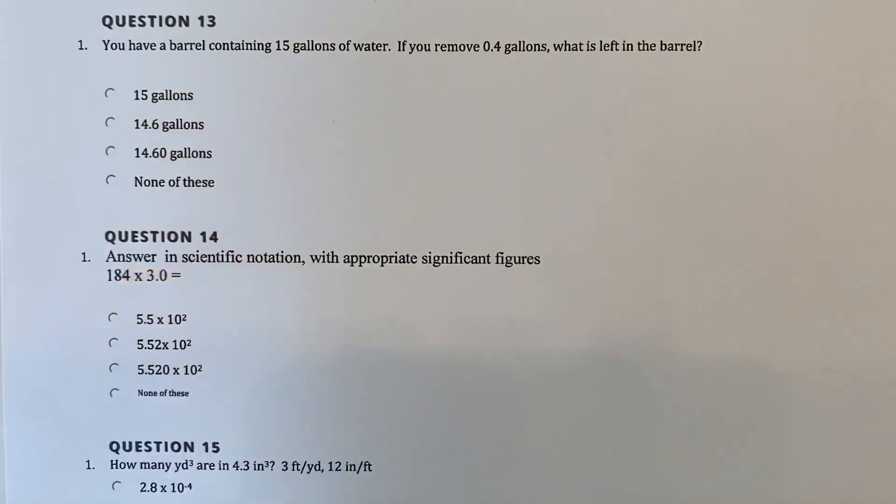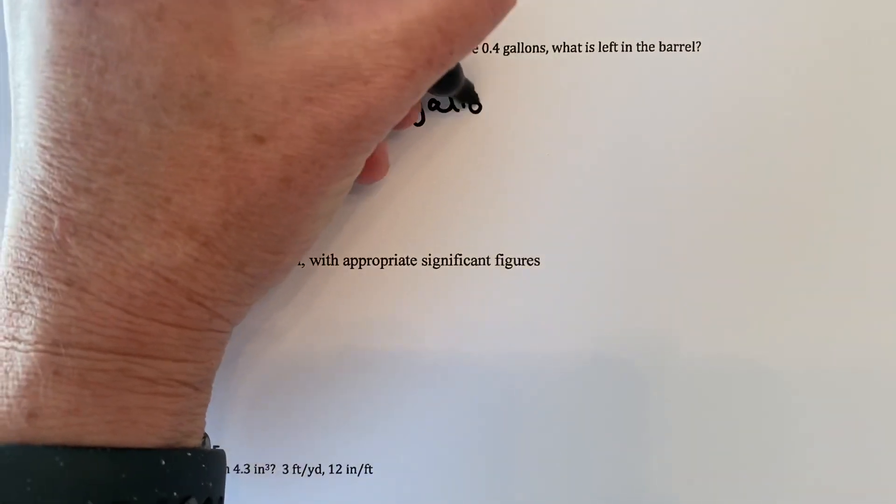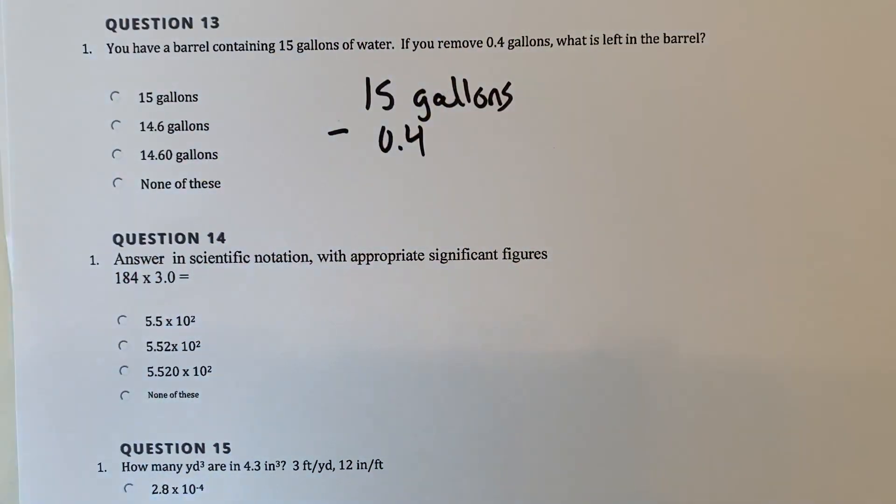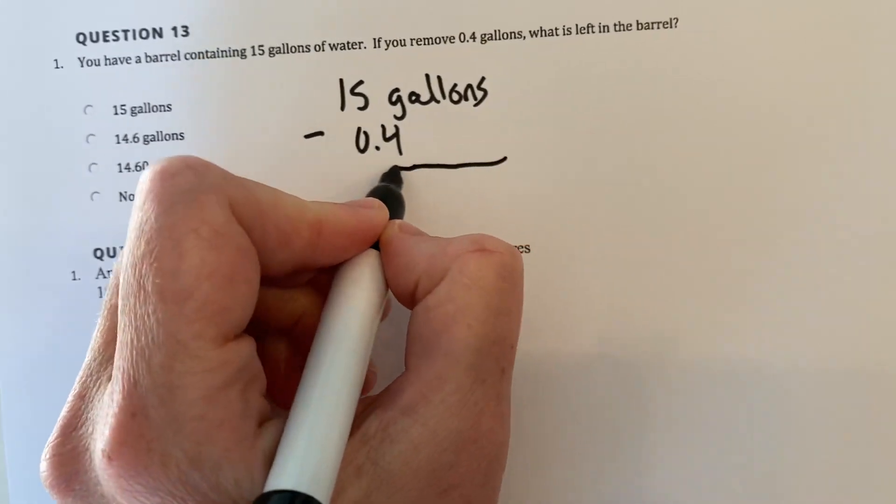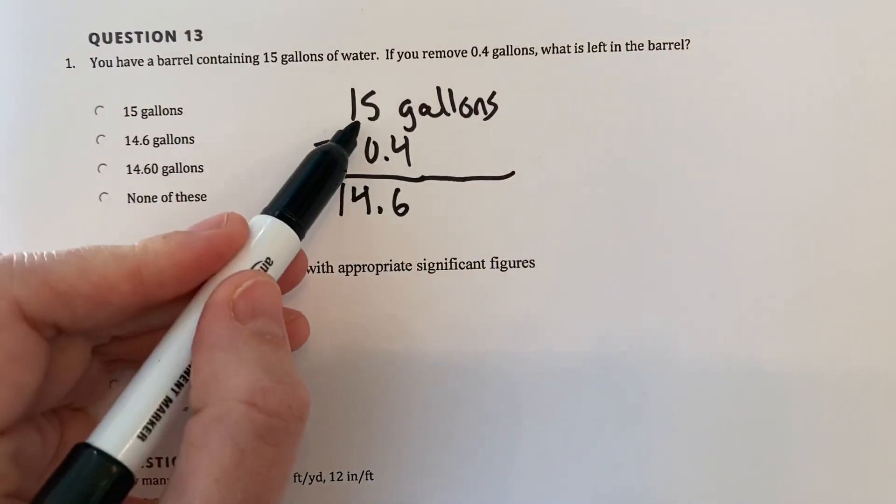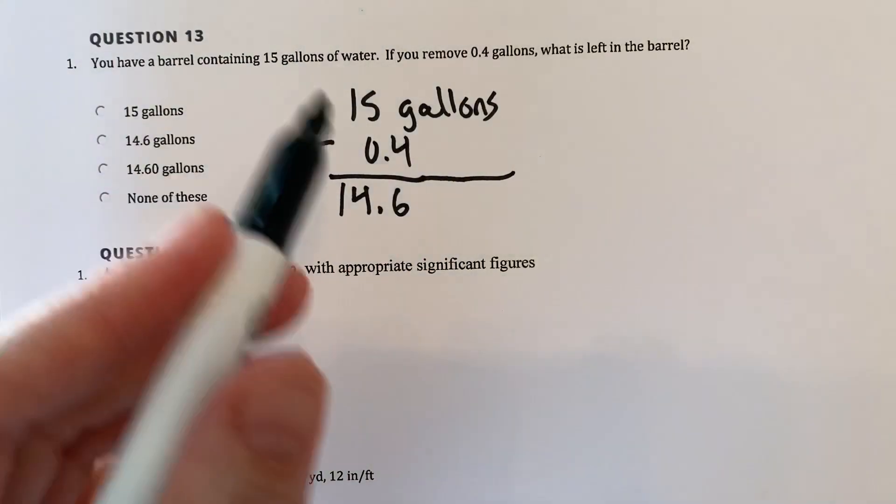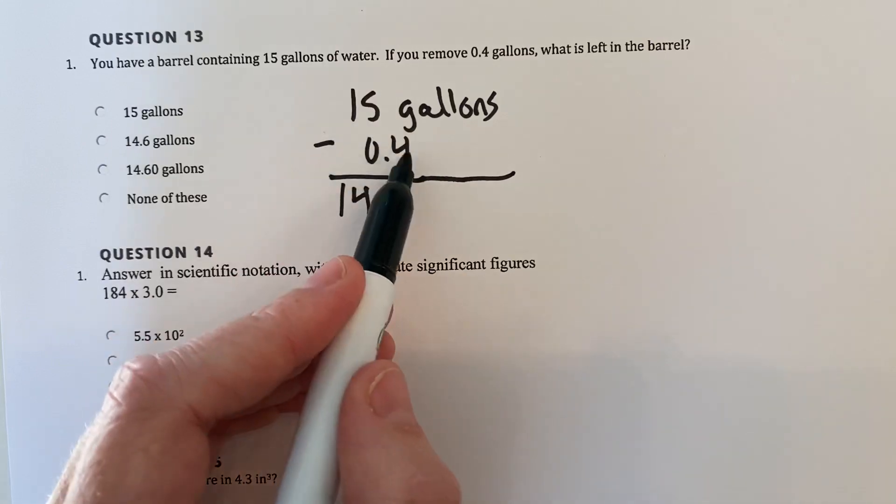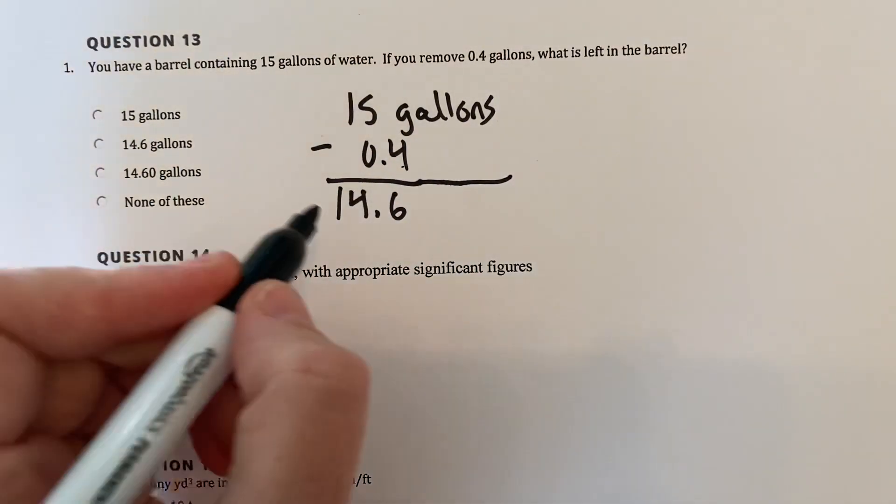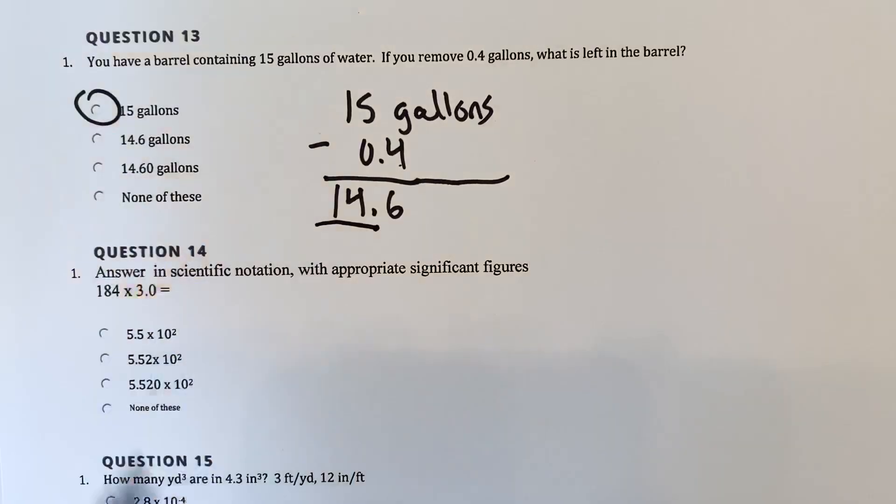Okay. Question 13. You have a barrel containing 15 gallons of water. So that sounds like a measurement to me. If you remove 0.4 gallons, what's left in the barrel? Well, if you take 15 and you subtract 0.4, you get 14.6. But this 15 wasn't really 15. It was somewhere between 14 and 16. You have no idea where because it only had two sig figs. So when you subtract, you look at the precision. This one you knew to the ones place. This one you knew to the tenths place. Which one do you know the least about? That'd be the ones place. So you really only know it to the ones place. You ask yourself, this number's five or greater. It is. So you round up and you got 15 gallons.